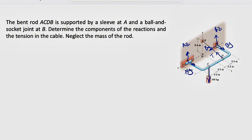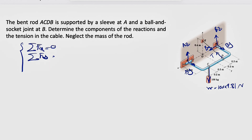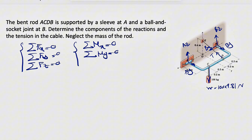We also have the weight, which is mass times the acceleration of gravity, 9.81, giving us the weight in Newtons. Looking at this, we have six unknowns, which means we need six equations to solve this problem. In 3D we have three force equations — sum of all forces in X, Y, and Z equals zero — and three moment equations about the X axis, Y axis, and Z axis. So we should be able to find all unknowns because we have six equations and six unknowns.